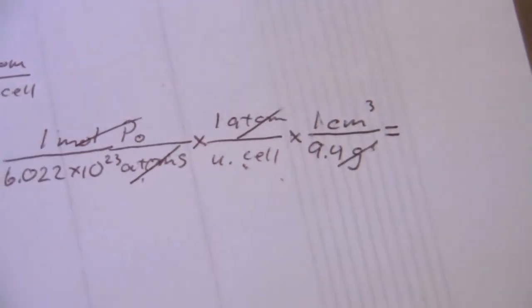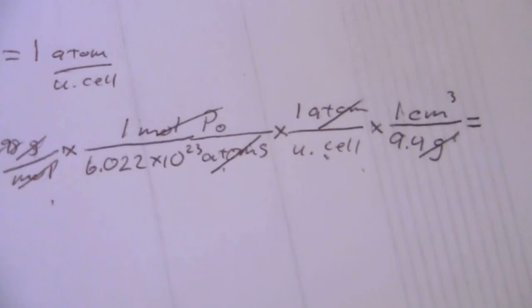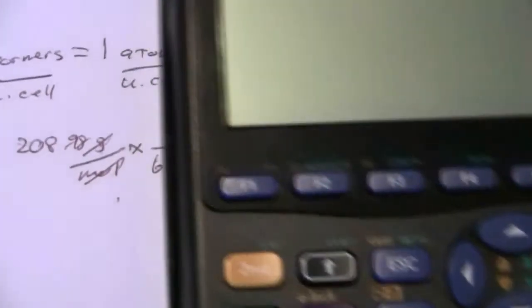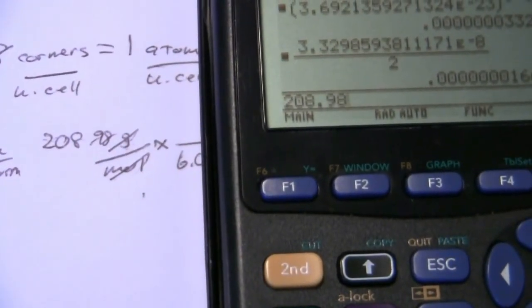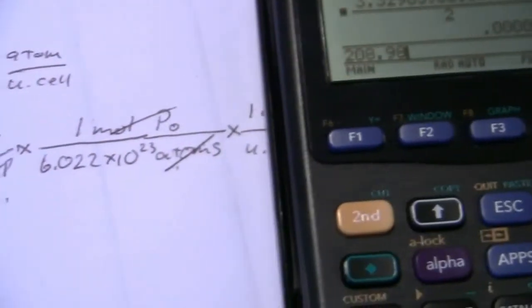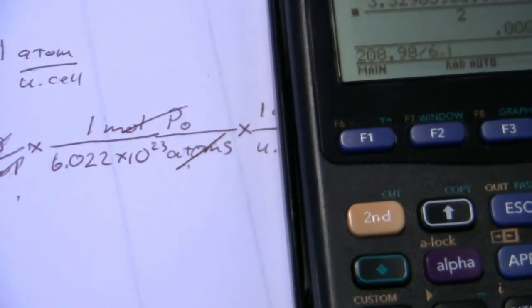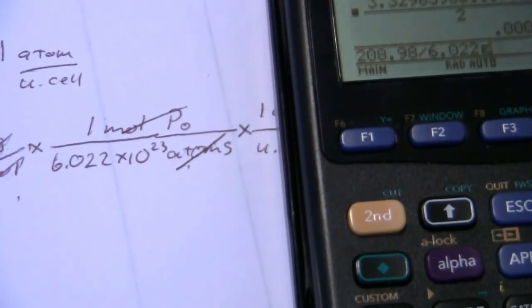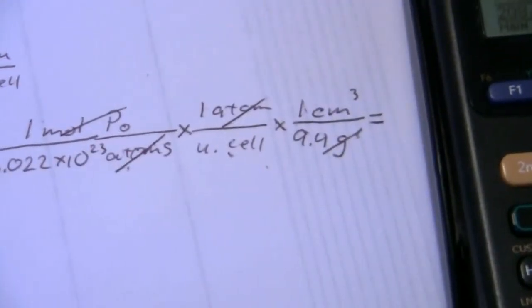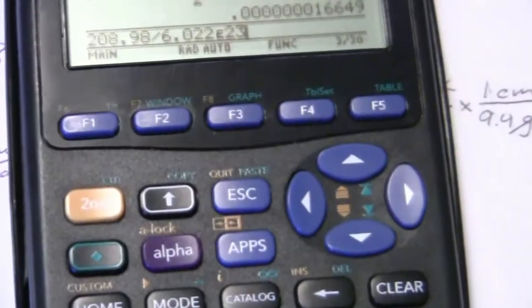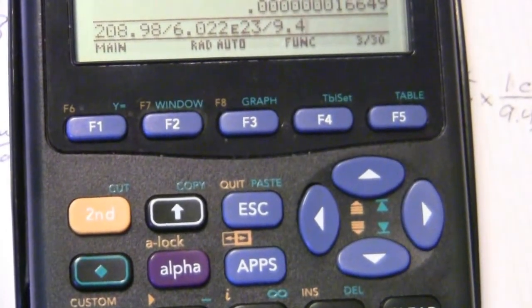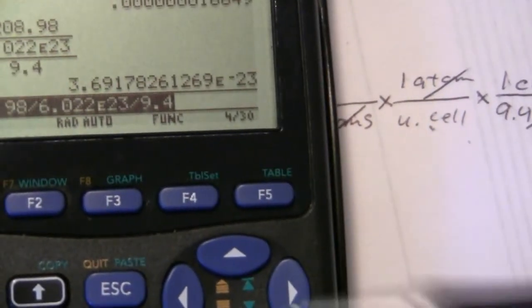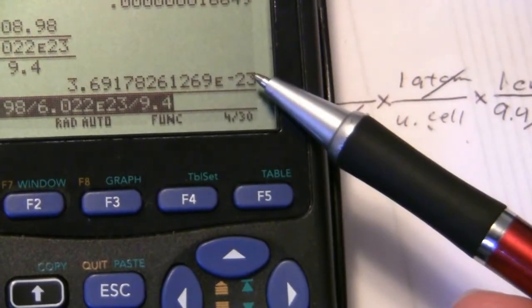So first let me go ahead and calculate this value, and then I'll take the cube root of that. So we have 208.98 divided by 6.022 times 10 to the 23rd. And then one atom per unit cell. I don't need to type that one in, but I can put in my divided by 9.4 grams per cubic centimeter,